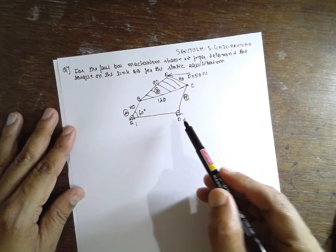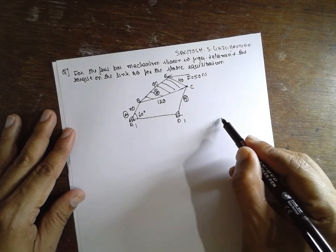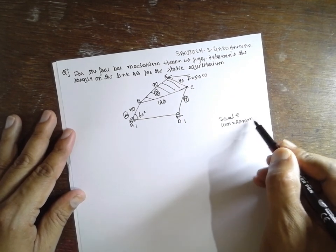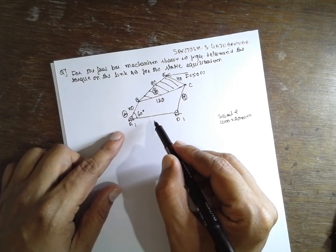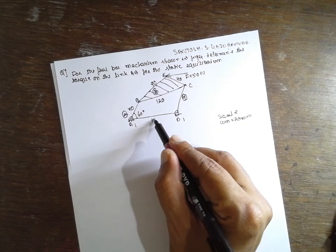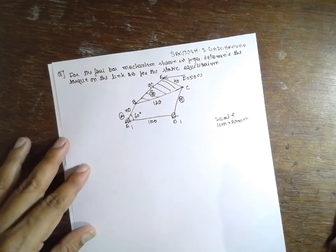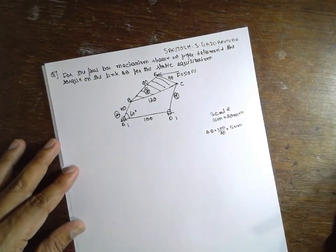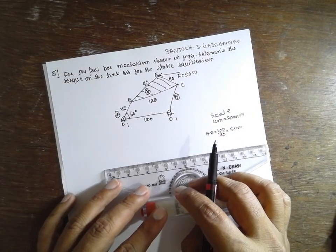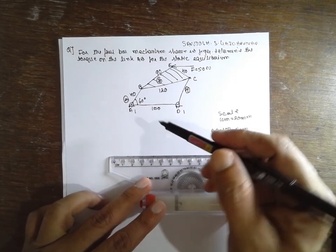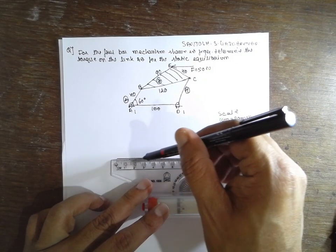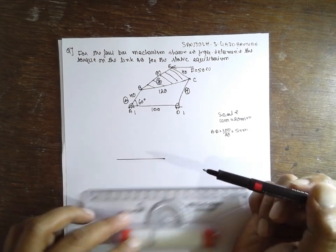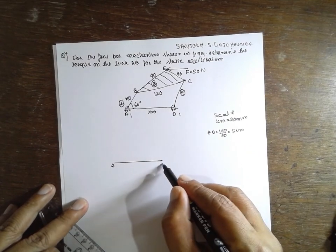This is the diagram that I have given. First, I will consider the scale here. 1 cm is equal to 20 mm. Now, the AD is 100 here. First I will draw AD, 100 divided by 20 is nothing but 5 cm. First I have to draw a line of 5 cm here. This is A, this is D, 5 cm.